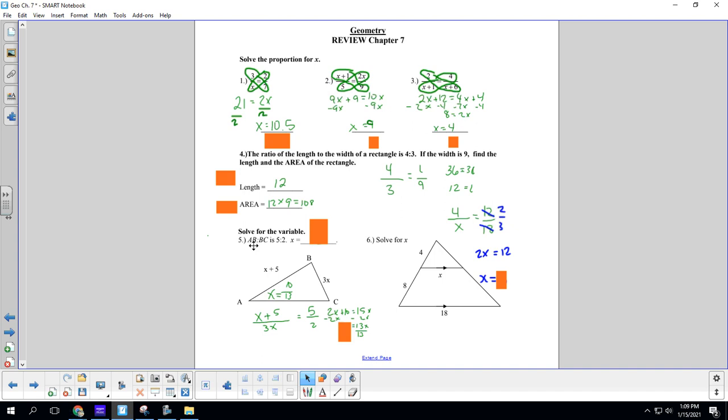Number 5, solve for the variable. AB is proportional to BC. Sorry, the ratio of A to B is 5 to 2. Find x. So A to B, so that's x plus 5 over BC, which is 3x. I put that together right here, is equal to 5 over 2.